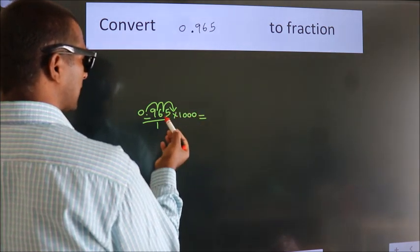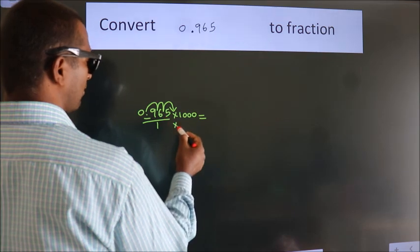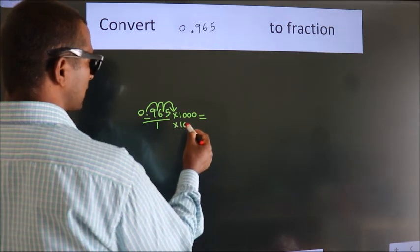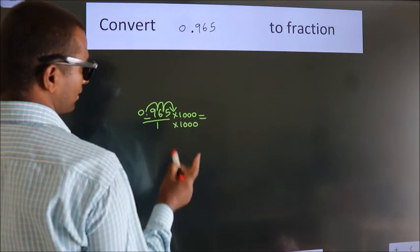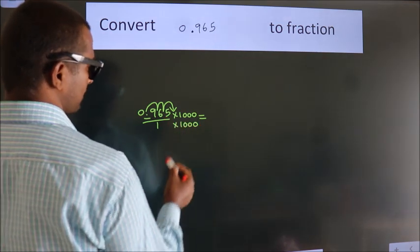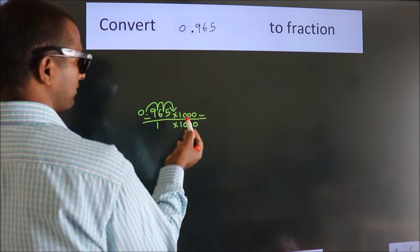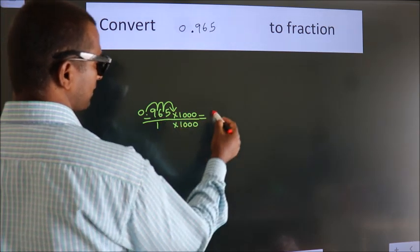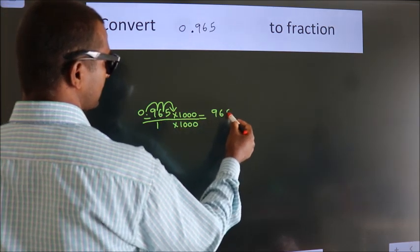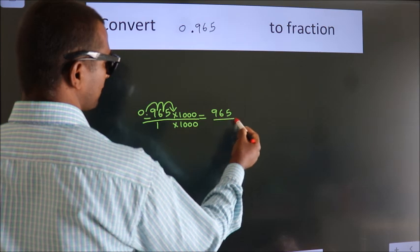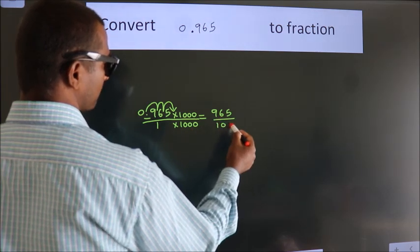Whatever you are multiplying in the numerator, in the denominator also do the same. So, 0.965 into 1000 equals 965, and 1 into 1000 equals 1000.